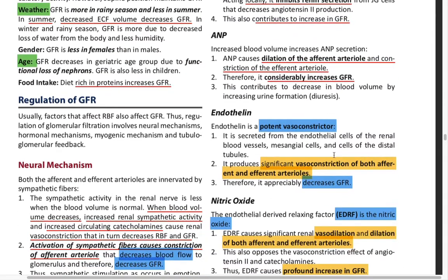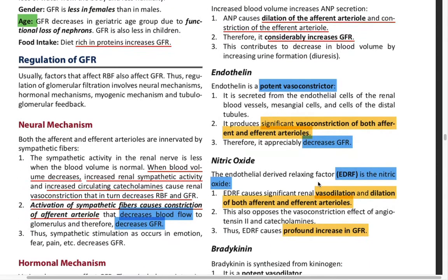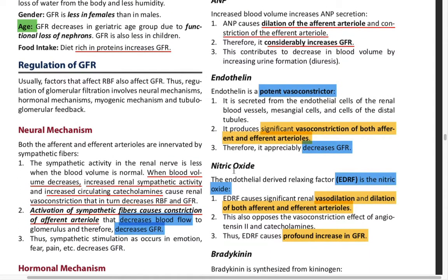Next is endothelin, which is a potent vasoconstrictor. It constricts both afferent and efferent arterioles, thereby decreasing the GFR.